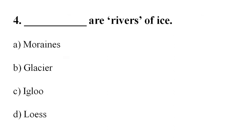Question 4: ___ are rivers of ice. Option A: Moraines. Option B: Glacier. Option C: Igloo. Option D: Loess. Your correct answer is Option B, Glacier.